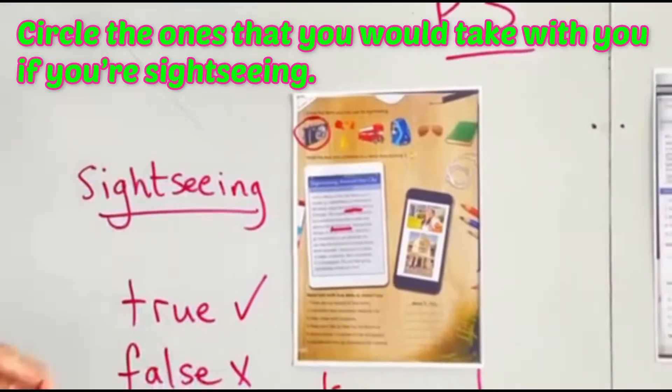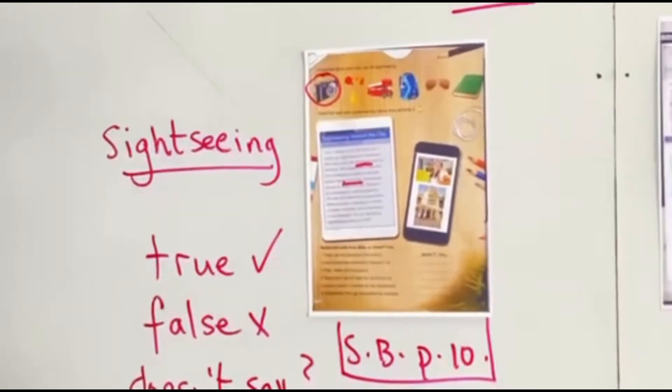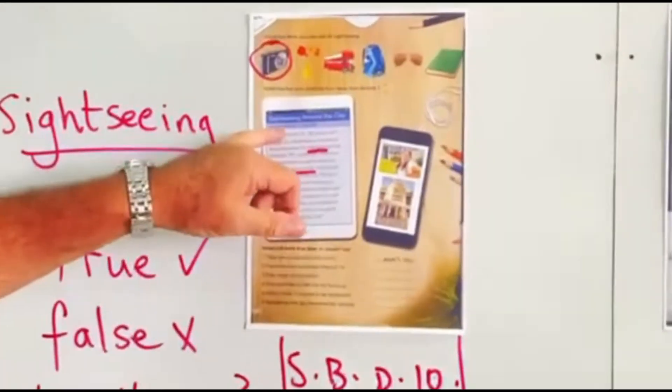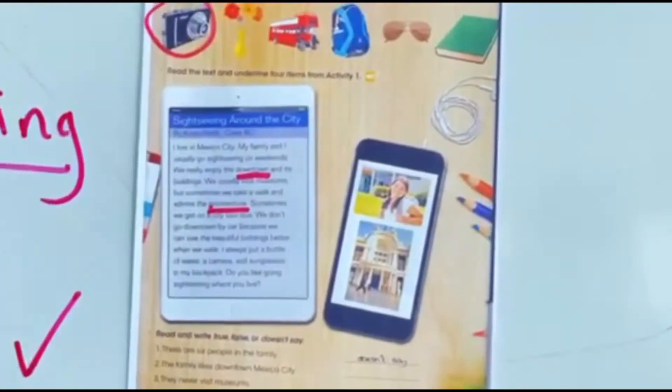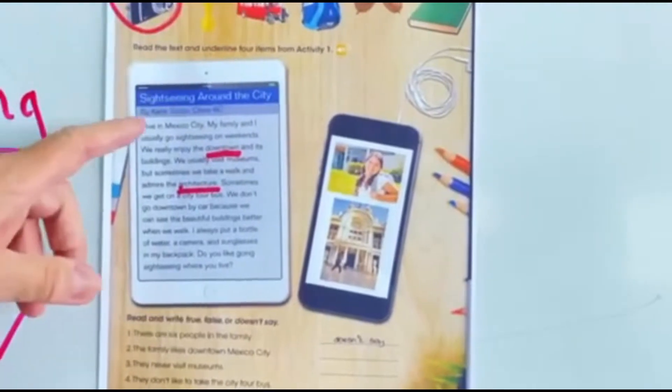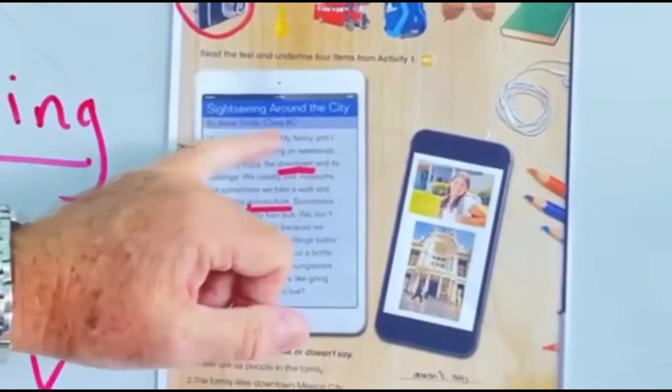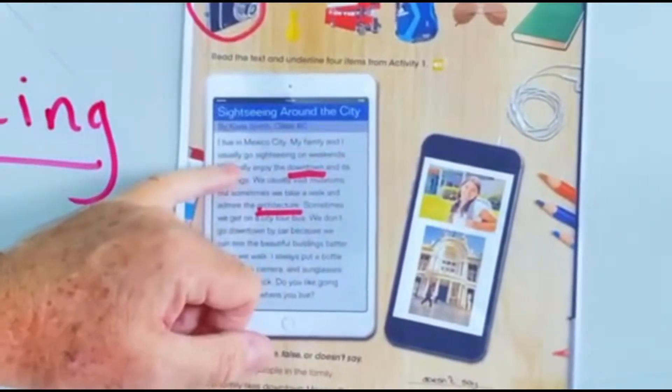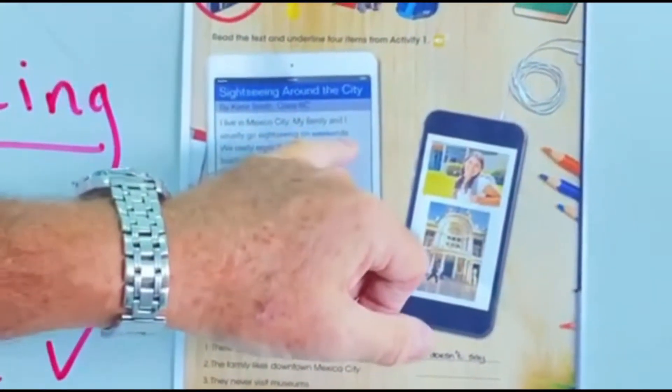And then let's look at the little text message here. The text message is from the girl Carla and Carla lives in Mexico City in the country of Mexico in North America. Let's look what she says.